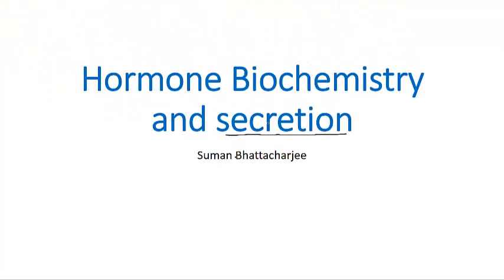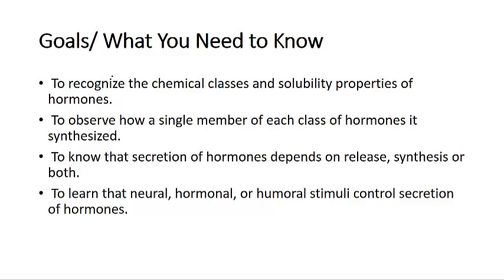We've been talking about the different glands in our human body and the different types of hormones secreted by those glands. We also need to know the chemical nature of those hormones and how they are transferred from the cell to the destination or target organs. The goals for our learning are to recognize the chemical classes and solubility properties of hormones, observe how a single member of each class is synthesized, know that secretion depends on release, synthesis, or sometimes both, and learn the neural, hormonal, and humoral modes of hormone secretion and regulation.